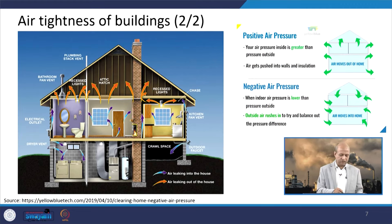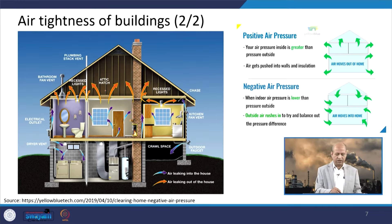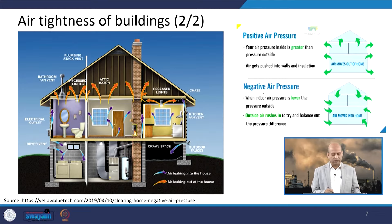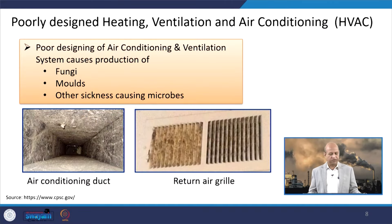When ventilation systems are functioning properly, positive pressure causes air to go from inside to outside, but air also comes from outside to inside depending on pressure. Wherever negative air pressure exists, air will come from outside to inside; wherever positive pressure exists, air will go from the building to the outdoor environment.